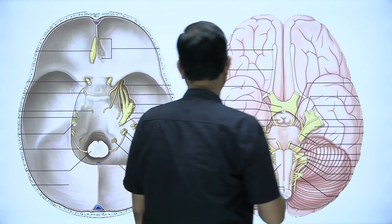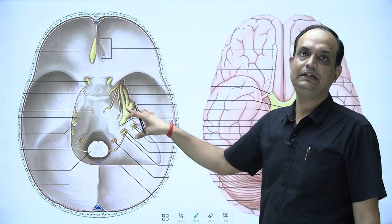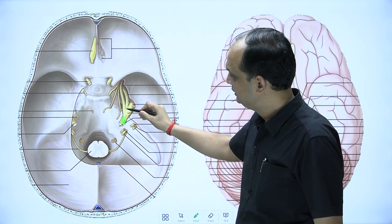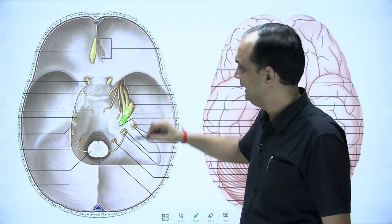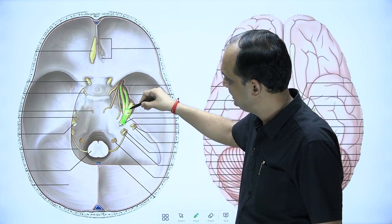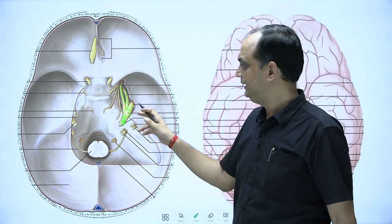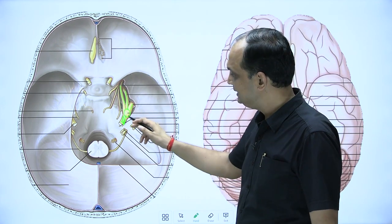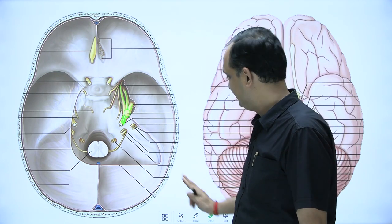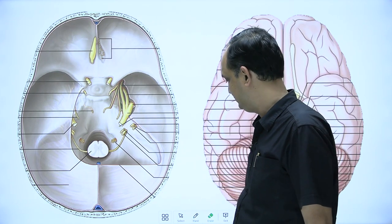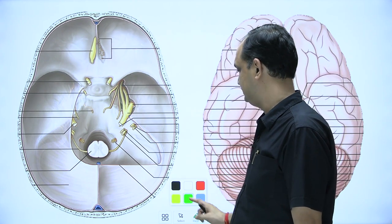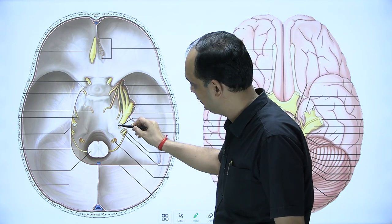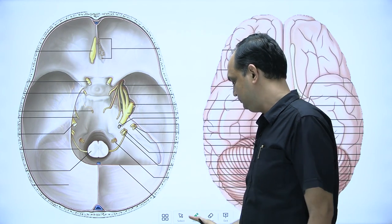In this diagram you can see the cranial cavity with the trigeminal nerve and trigeminal ganglion. From the ganglion you have three branches: ophthalmic, maxillary, and mandibular. The mandibular nerve is the thickest and largest branch of the trigeminal ganglion. If you look carefully, you can also appreciate the motor nerve running below the trigeminal ganglion.